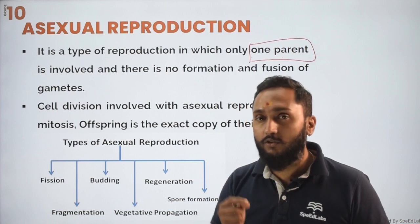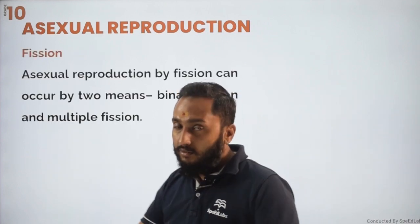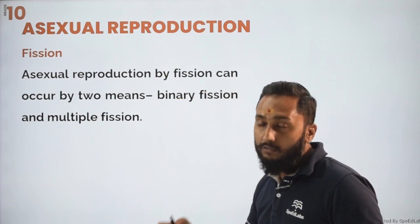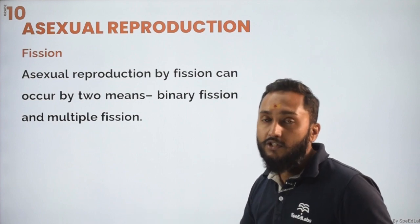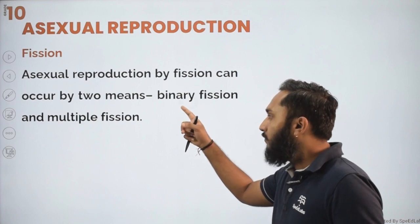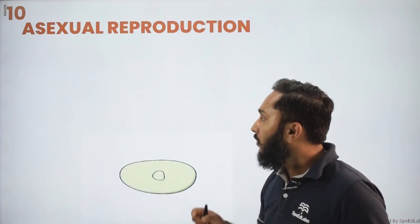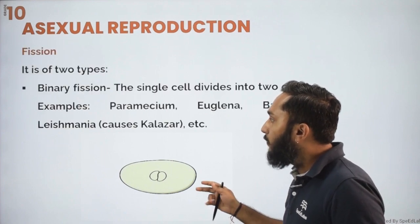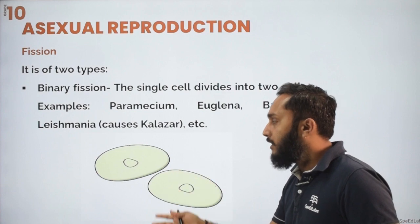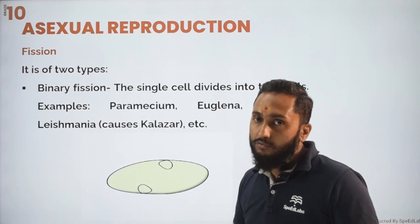The first type is fission. Fission means something which is going to split. When one organism splits or divides into two, such type of asexual reproduction is known as binary fission. There is also multiple fission — these are the two types of fission. Binary fission can be seen in the case of Paramecium, Euglena, Amoeba, and Leishmania.